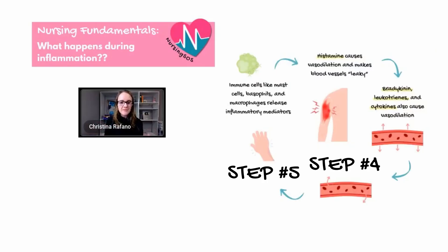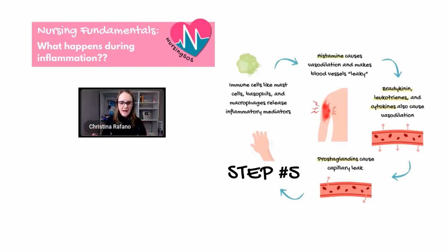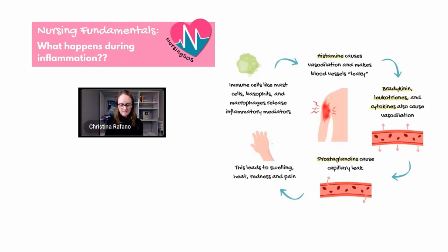Another inflammatory mediator is prostaglandins. Prostaglandins cause more capillary leak, so more fluid moves out into the tissues to help get white blood cells, antibodies, and nutrients to help heal the damaged tissue. If there's any bacteria or infection, those white blood cells and antibodies will attack and fight off whatever pathogens are there. This leads to swelling, heat, redness, and pain in those inflamed areas because all that blood flow is going there.